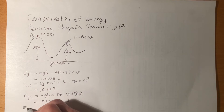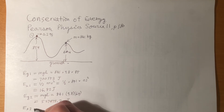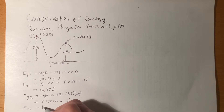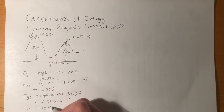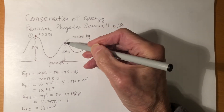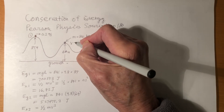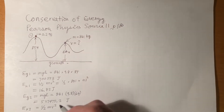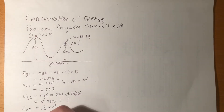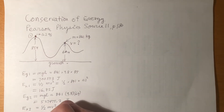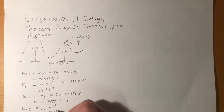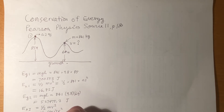The kinetic energy at position 2 uses the same formula, one-half MV squared. What we want to find in this question is the velocity at position 2 — that's the unknown. Putting in numbers: one-half times 841 times V squared equals 420.5 V squared.